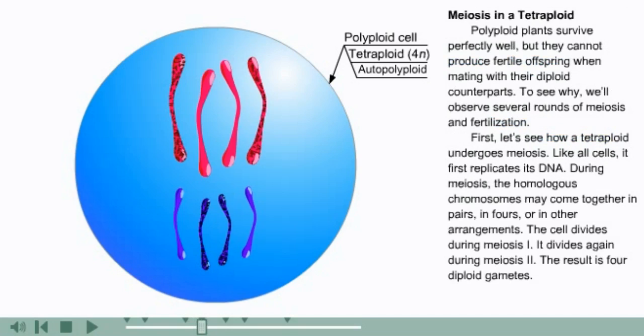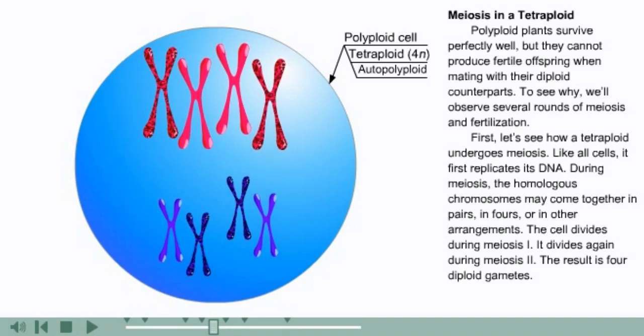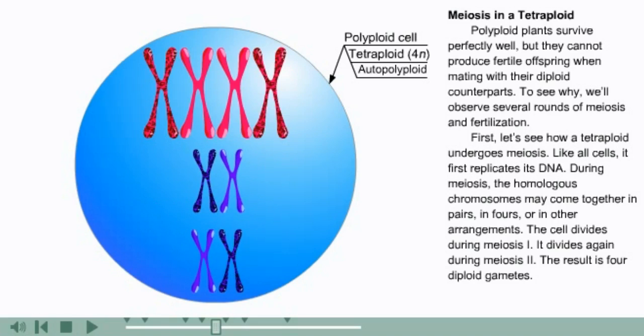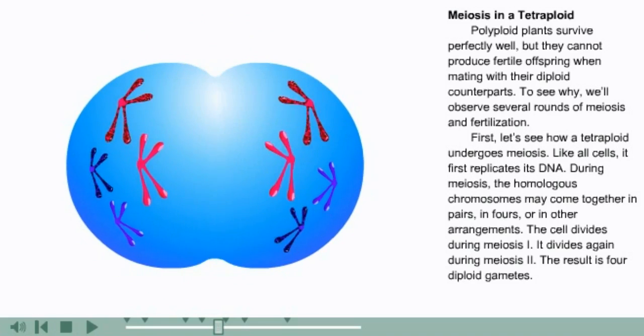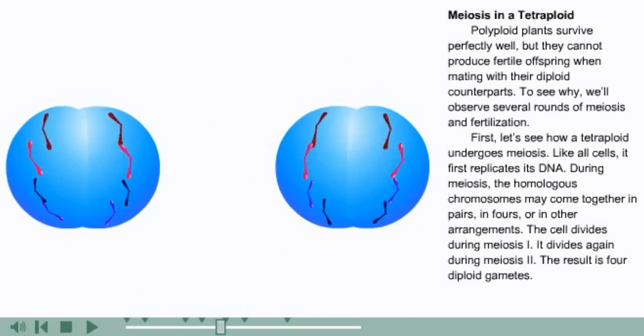Polyploid plants survive perfectly well, but they cannot produce fertile offspring when mating with their diploid counterparts. To see why, we'll observe several rounds of meiosis and fertilization. First, let's see how a tetraploid undergoes meiosis. Like all cells, it first replicates its DNA. During meiosis, the homologous chromosomes may come together in pairs, in fours, or in other arrangements. The cell divides during meiosis one, then divides again during meiosis two. The result is four diploid gametes.